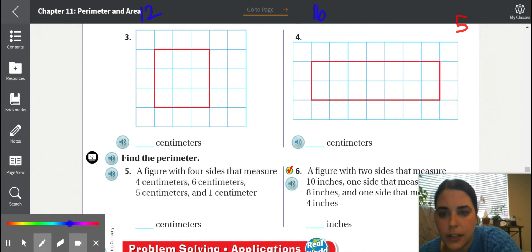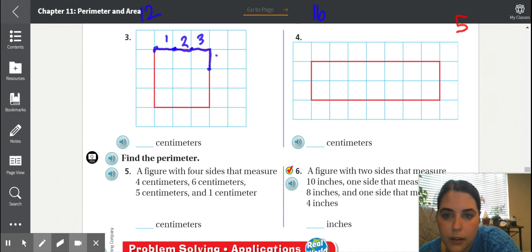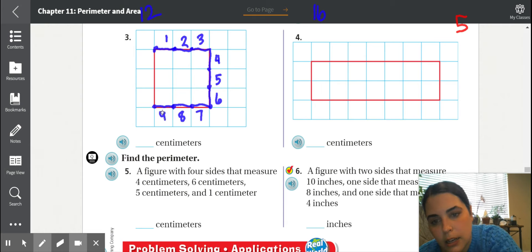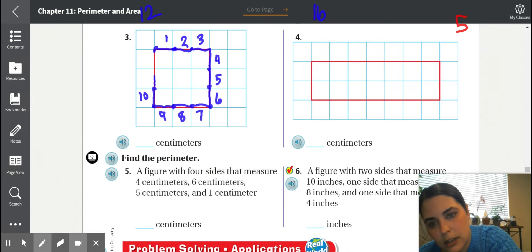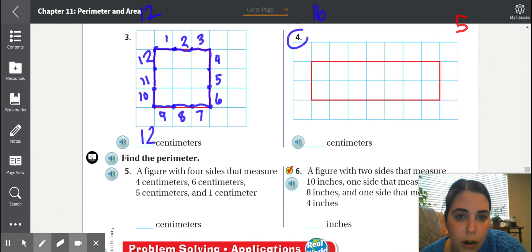All right, let's start here. One, two, three, four, five, six, seven, eight, nine, 10, 11, and 12. So we'd say this perimeter around is 12 centimeters. I want you to do number four on your own.